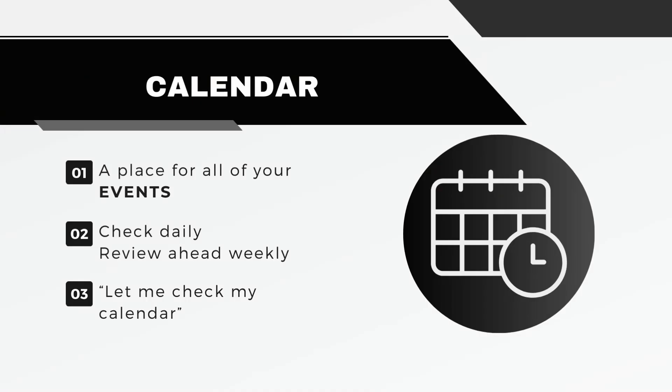The calendar is a place for all of your events. If you have an appointment, a meeting, a class — those are the most common ones — it goes in your calendar. Your calendar should be something you check every day that you intend to get work done, at least at the beginning and the end of your day. You can also look ahead weekly to the next week, and up to about two months ahead.